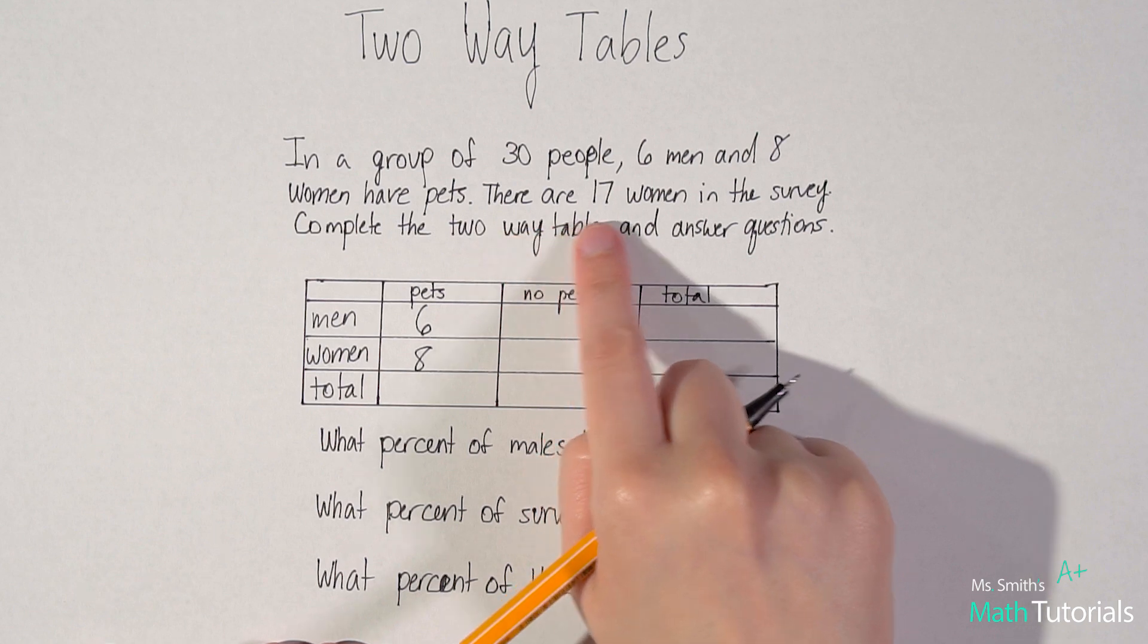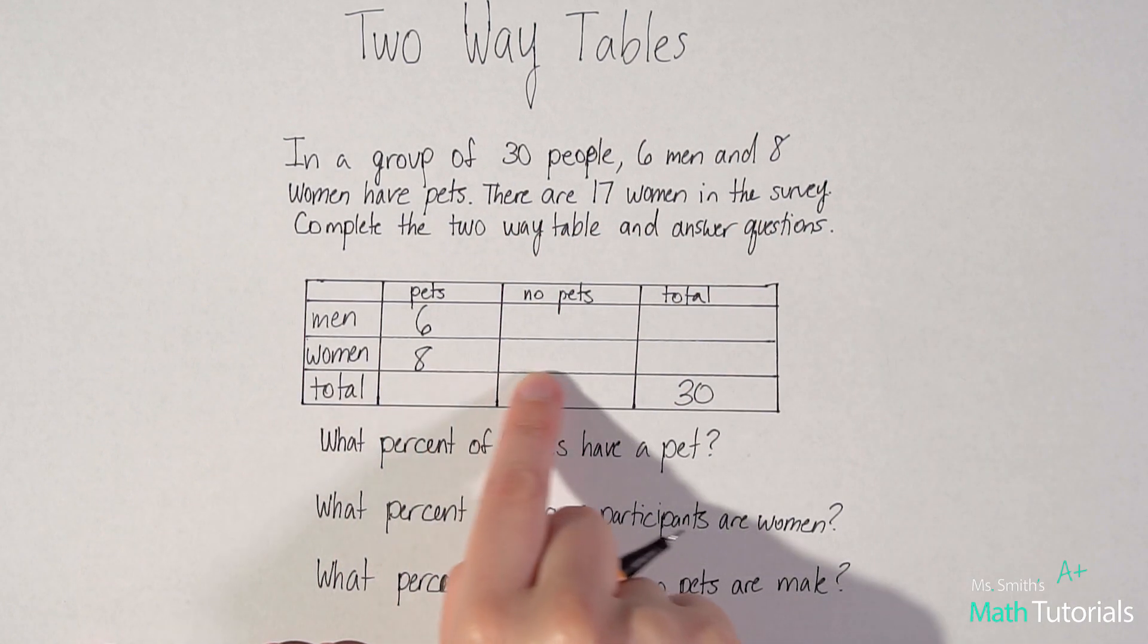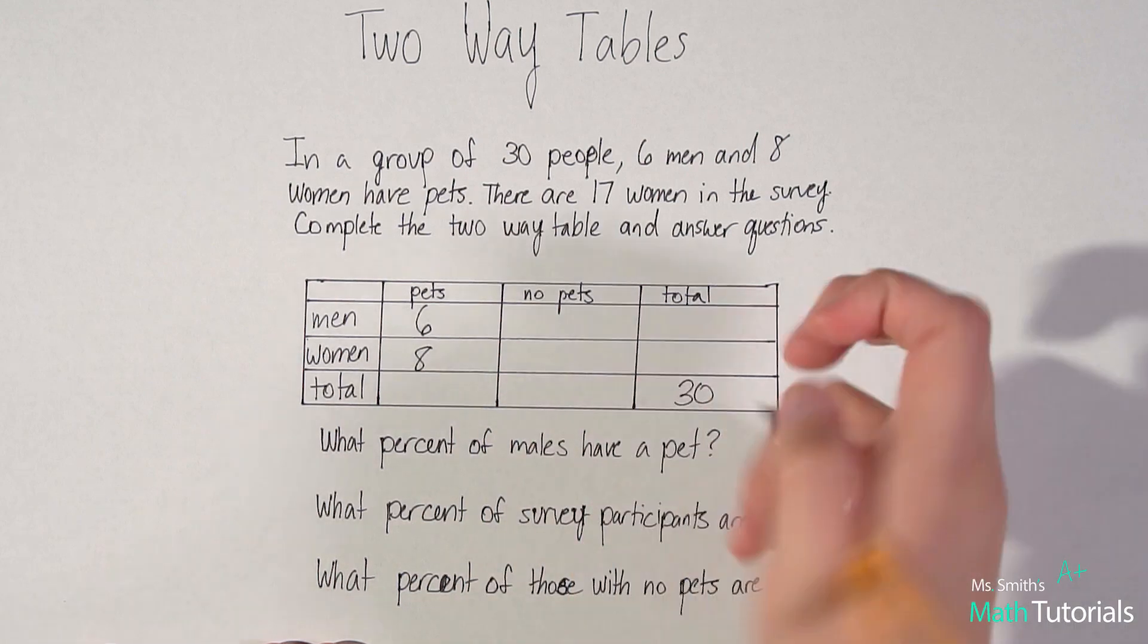Then it says there are 17 women in the survey. So women total, both with pets and without pets, there are 17 total.